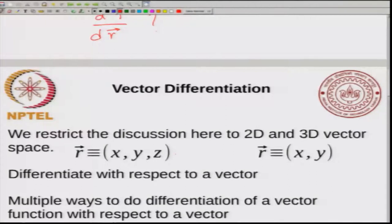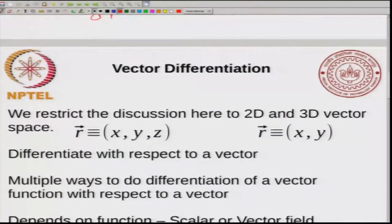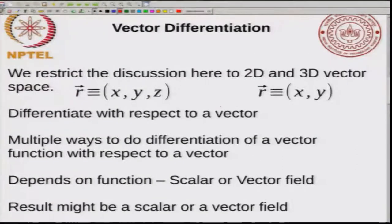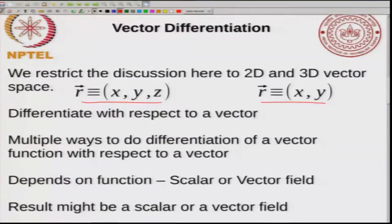We will restrict the discussion here to two-dimensional and three-dimensional vector space. All that I will be doing in this class will be restricted to either 3D vector space where r is written as x, y, z, or 2D vector space where r is written as x, y. We are going to differentiate with respect to a vector, and there are multiple ways to do this differentiation. It depends both on whether the function is a scalar or vector field, and on what result you want — a scalar or a vector field.